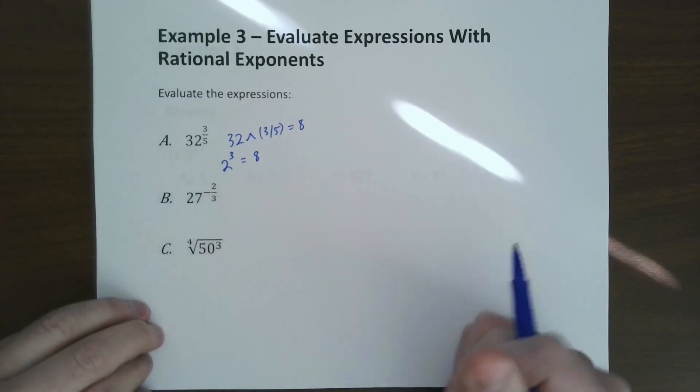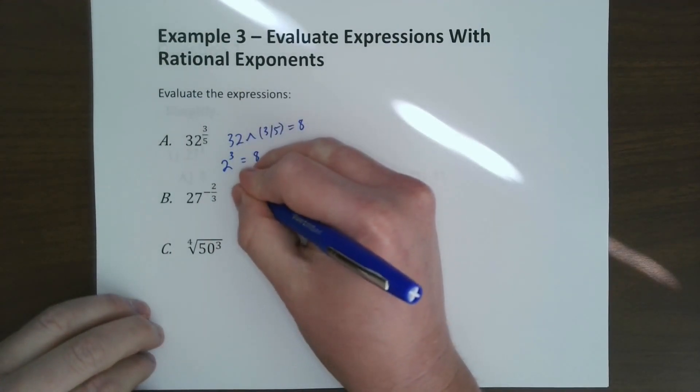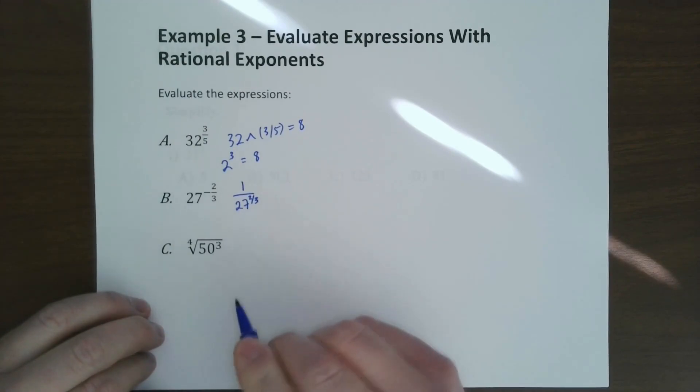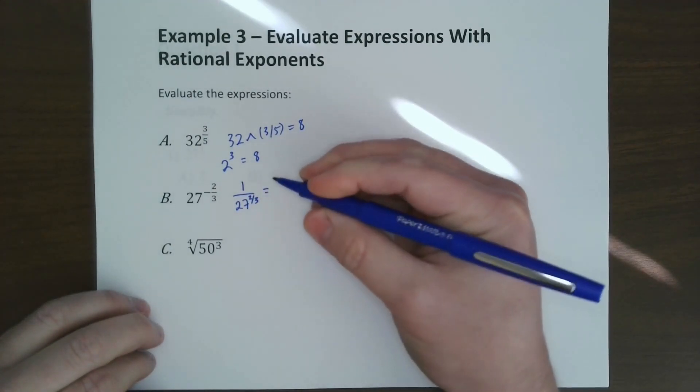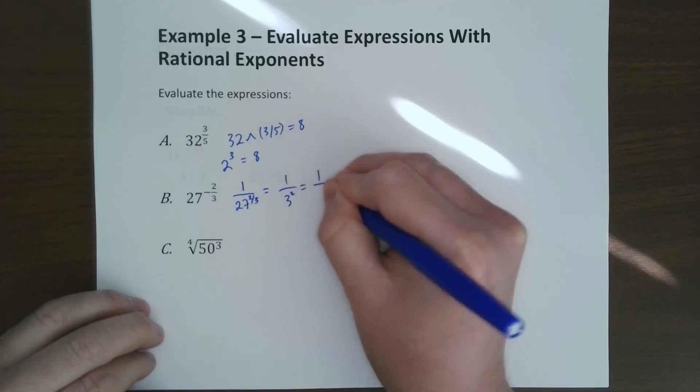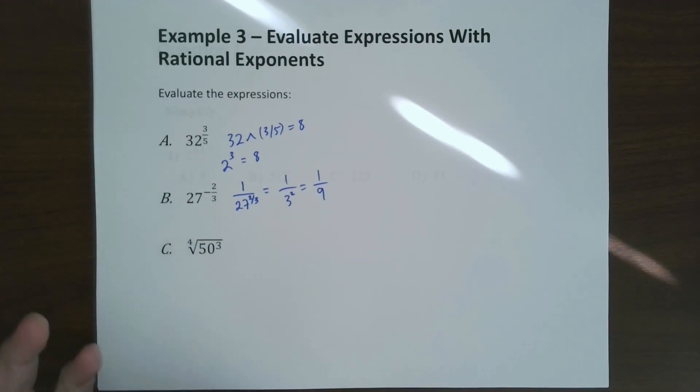With the negative exponent, we first write it as a fraction. What is the third root of 27? That would be 3, which would be 3 squared is 9. I highly recommend doing the root first, and then go from there.